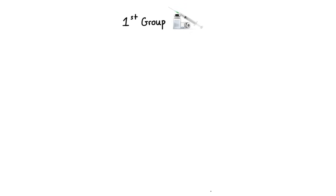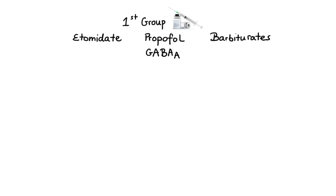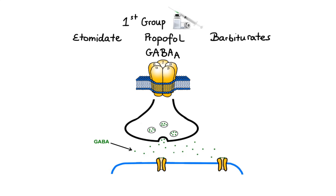The first group consists of intravenous agents: etomidate, propofol and barbiturates. These drugs are much more potent at producing unconsciousness rather than immobility or analgesia, and are commonly used in the induction phase. Their effects are mediated by a subset of GABA-A receptors, which are located postsynaptically and extrasynaptically on most neurons in the CNS. They are composed of pentameric arrangements of subunits around a central ion channel pore. When endogenous GABA binds, it causes a conformational change opening the central pore, allowing chloride ions to pass down the electrochemical gradient, leading to hyperpolarization of the resting potential and making it more difficult for excitatory neurotransmitters to depolarize the neuron.